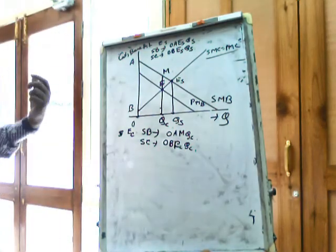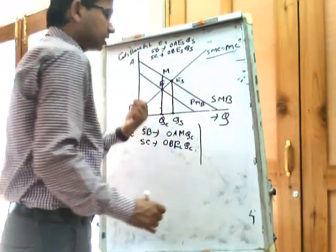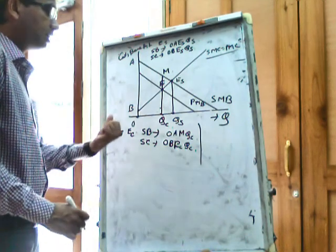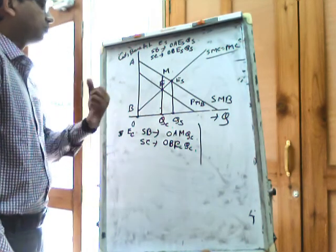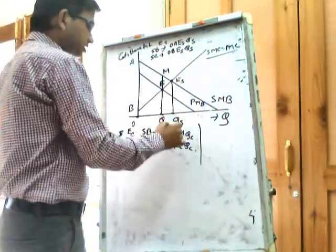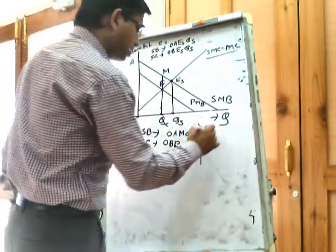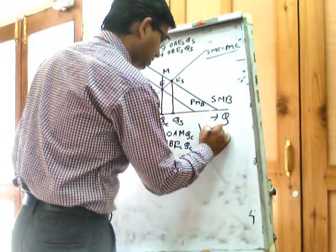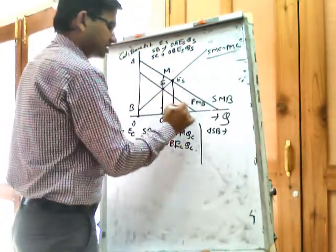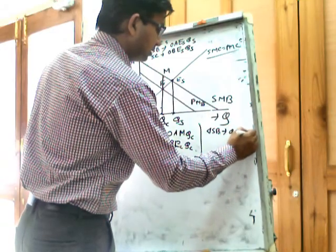Now we have to consider what is the decline in social cost and what is the decline in social benefit for producing at the suboptimal level of output. You can take the difference between these two. The decline in social benefit is the area of the quadrangle QC, M, ES, QS.